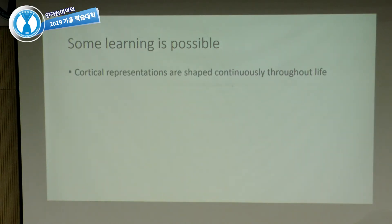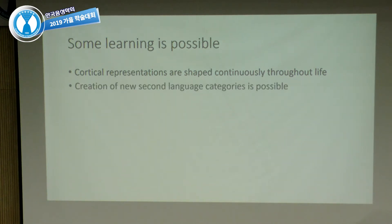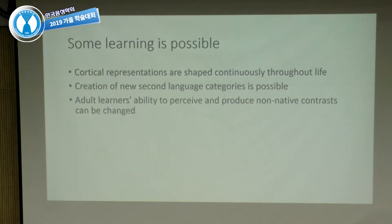As age of arrival increases, the accent rating goes down — that is, the accent gets stronger. But there are ages beyond the critical period for which quite native-like performance is still possible. We also know from the neuroscience literature that cortical representations are shaped continuously throughout life. They don't stop past the critical period. So, as good news, creation of new second language categories is possible — adult learners' ability to perceive and produce non-native contrasts can be changed.